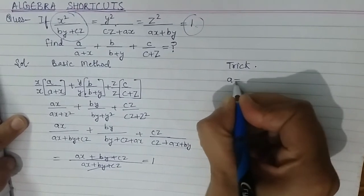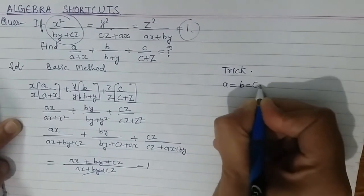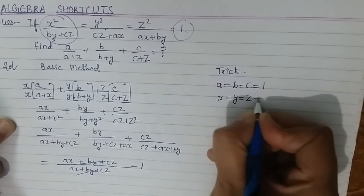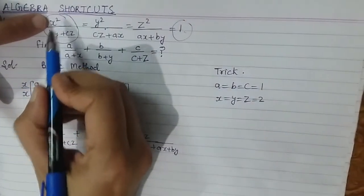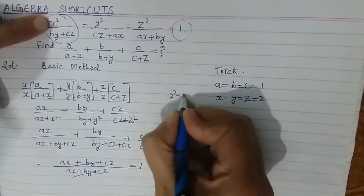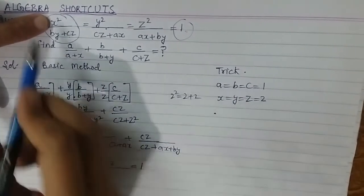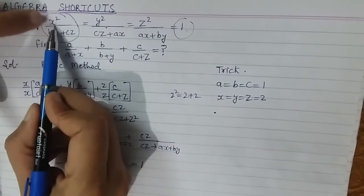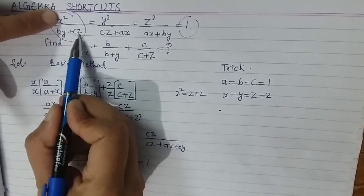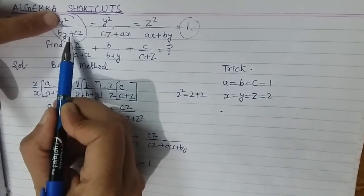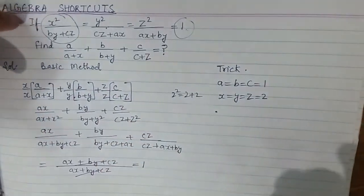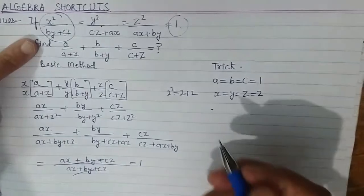Now I will tell you one trick method. I will take the values a, b, and c as 1, and the values of x, y, and z as 2. Why? Because 2² equals 2 + 2 — we know this, 2² equals 4 and 2 + 2 equals 4. So with x=y=z=2: x² equals 4, and by + cz equals 1×2 + 1×2 which also equals 4. So they get cancelled and the given condition is satisfied with these values.